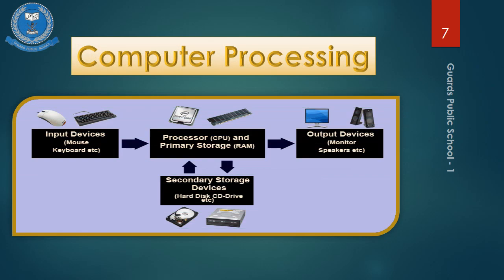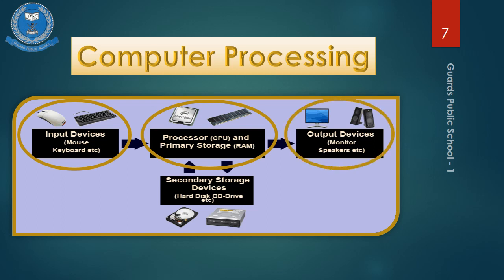Here is a clear picture of the processing of data. First, we feed data into the computer with the help of input devices like keyboard, mouse, mic, etc. Then the data moves into the CPU for processing. With the help of the processor, that data is processed and temporarily saved in primary memory or RAM. After processing, the data moves to the output devices, and all results come out through output devices like speaker, monitor, etc.